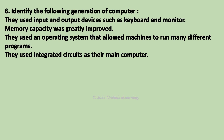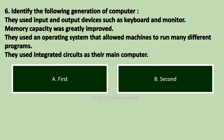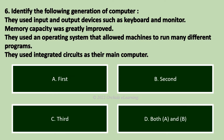Identify the following generation of computer. They used input and output devices such as keyboard and monitor. Memory capacity was greatly improved. They used an operating system that allowed machines to run many different programs. They used integrated circuits as their main component. Answer C: Third generation.